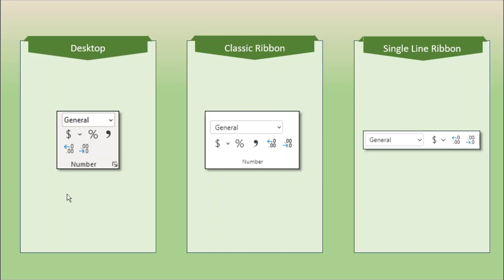The next group is the number group. Looking at this desktop ribbon group, we can see that we have a dropdown for 'General' where we can choose numeric and date formats. But generally we can always go with currency all over the world. We have a percent button, a comma button that allows commas for the thousandth place and adds two decimal places as well, and then we can increase or decrease the number of decimals.